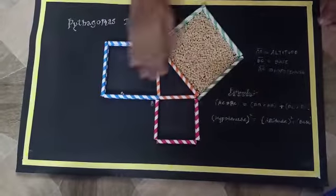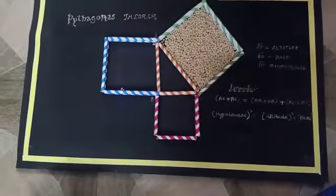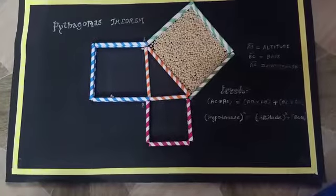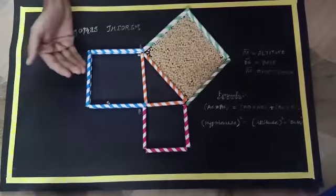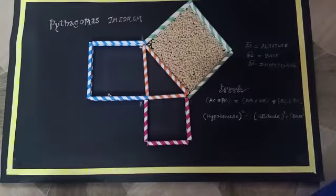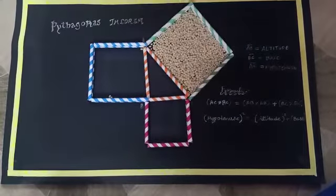Here you can see that these two squares have actually made this one square. Hence we can conclude that altitude AB squared and base BC squared equal the hypotenuse AC squared.